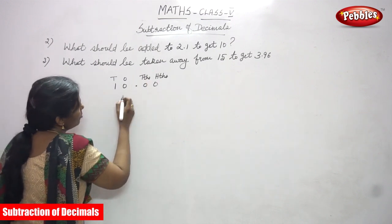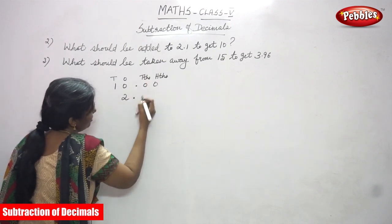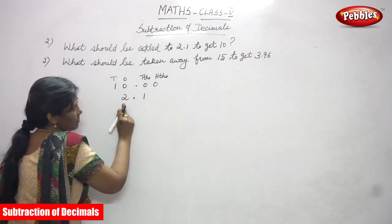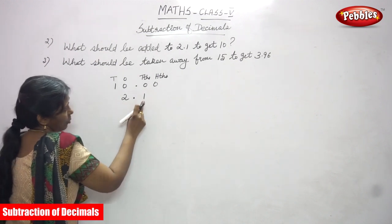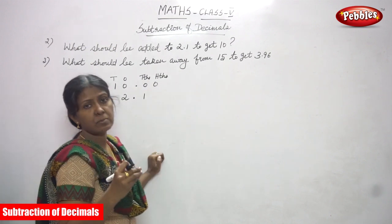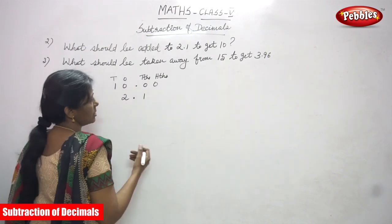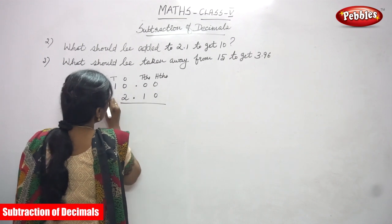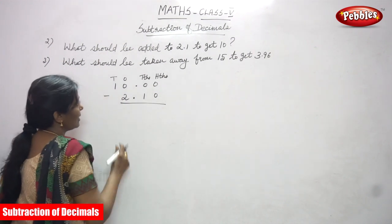Then after that, the number is 2.1, so we have to write 2.1 below. 2 comes under the 1's place and 1 comes under the 10's place. There is no number in the 100's place, so we have to put 0 there. So, these two numbers we have to subtract.